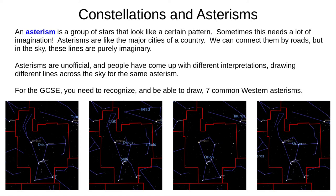When most people say 'constellation', they actually mean 'asterism'. An asterism is a shape or pattern formed by a group of stars, often helped by ancient astronomers with overactive imaginations. You can think of the stars as the major cities in a country, connected by imaginary lines or roads. The exact shapes and lines are unofficial, and people have come up with different versions for the same asterism. Here you can see four common modern versions of Orion — the official constellation boundaries remain the same, but the unofficial asterism lines are different.